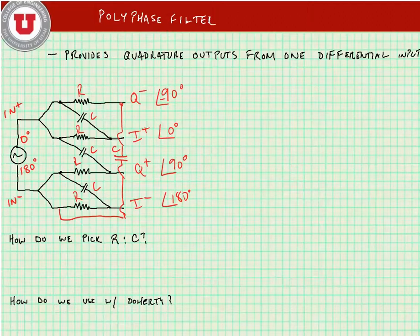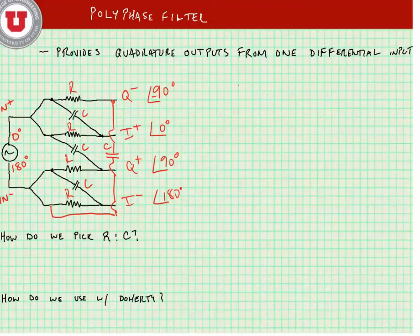So you see that what we're getting at the output is quadrature signals, where we have a differential in-phase component, zero and 180 degrees, and a differential quadrature component, 90 degrees and minus 90 degrees. All of the amplitudes are the same at the output, but the phase delays are different.